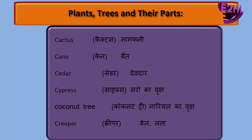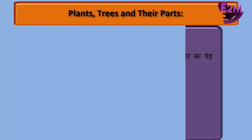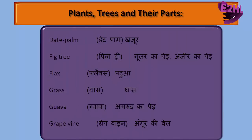Coconut Tree — Nariel Kaped. Creeper — Bail Yalata. Dead Palm — Khajur. Fig Tree — Booler Kaped, ya Anjir Kaped. Flax — Patua.